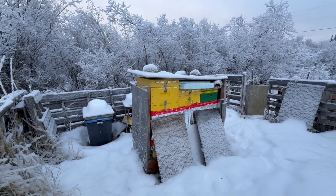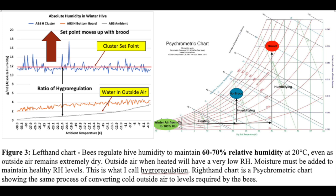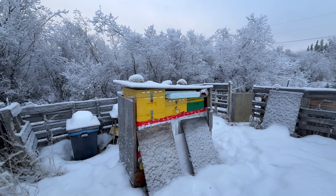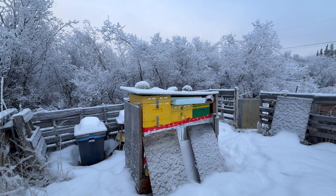A lot of these principles follow thermodynamics — specifically what we call psychrometry, or psychrometric processes. That's what's used in HVAC: heating, ventilation, and cooling. The cluster of bees is essentially your heating unit — they heat the air but also add moisture to it. In winter, because it's cold and dry, bees actually need that moisture in the air to stay healthy and maintain a good balance.